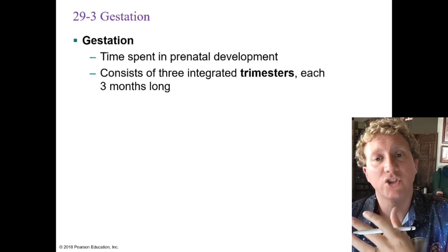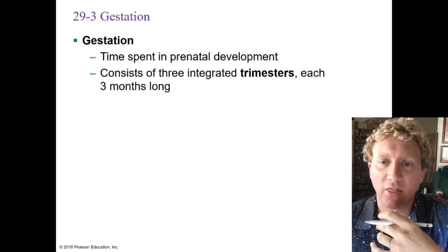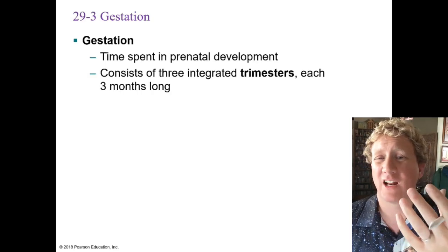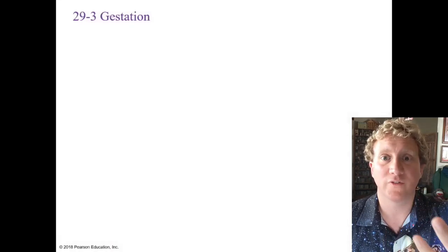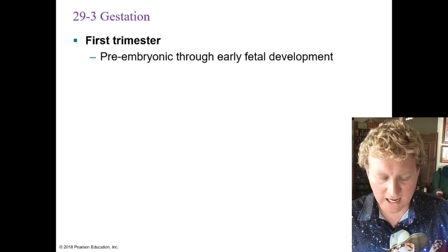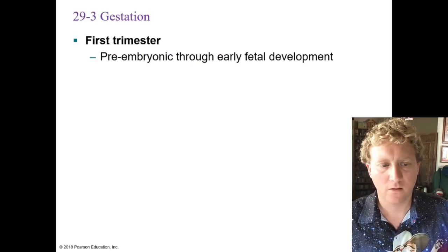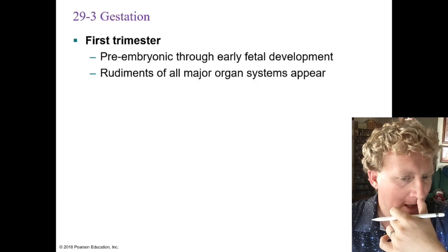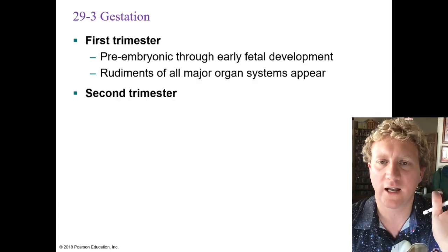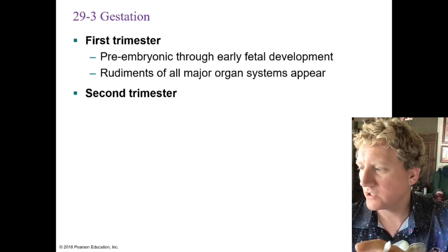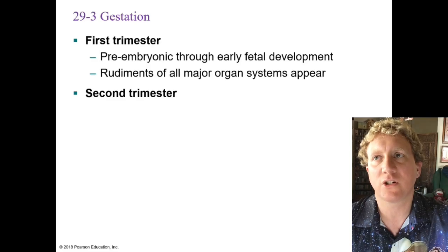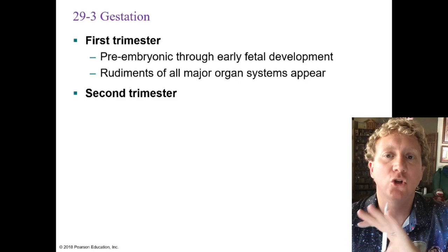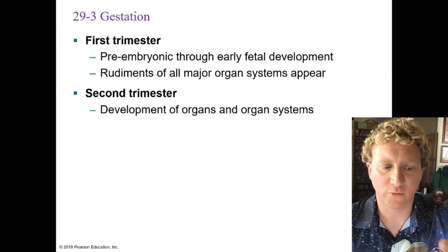Different animals have different gestational periods — elephants have 24 months, meaning mom is pregnant for two years; whales have a particularly long one; other animals have very short periods of just weeks or even days. Looking at our trimesters: the first trimester covers the pre-embryonic stage through early fetal development, where the starting points of all major organs develop. This trimester is super important — disruptions here can have huge effects later in life.